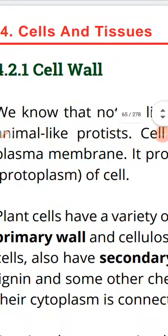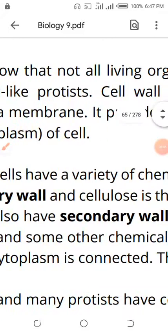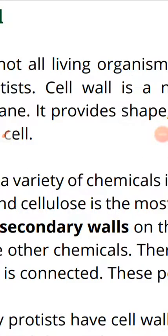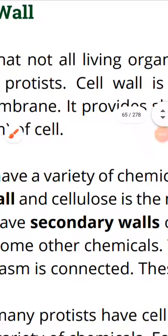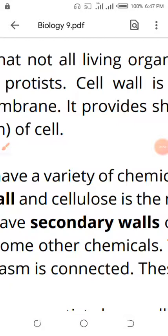If two cell walls are present, they are called the primary cell wall and the secondary cell wall. The primary cell wall is outside and the secondary cell wall is inside. So I have classified plants into two groups: one type with only a primary cell wall, and another type with both primary and secondary cell walls.